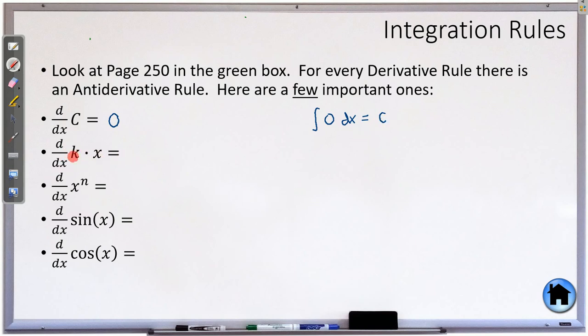If I take the derivative of a constant times x, like 5x, you just get the constant. That means if I take the antiderivative of just a constant, that will give me kx, and then as always, plus C.